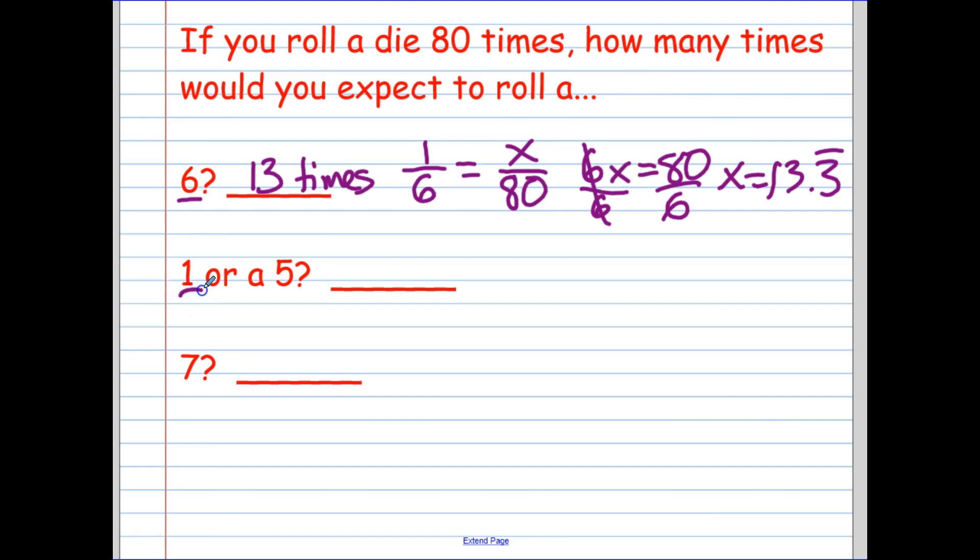All right. Probability of getting a 1 or a 5. Well, that's 2 sides out of 6 sides total. And that simplifies to 1/3. So my probability is 1/3. Set up my proportion with the probability on one side. My prediction out of 80 on the other side. Cross multiply like before. That's going to give me 3x equals 80. Divide by 3. I'm going to get that x equals 26.6 repeating. And that would round to about 27 times there.